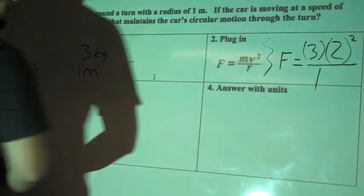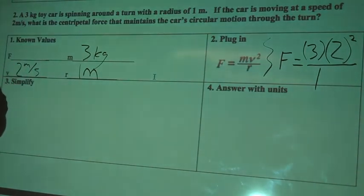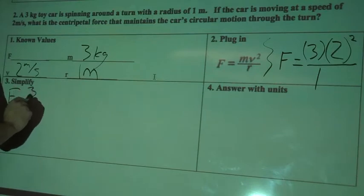Cool, so let's simplify. This looks like it's going to be a pretty easy problem since we got that one on the bottom there. So I've got F equals, centripetal force equals three times two squared divided by one.